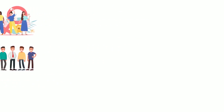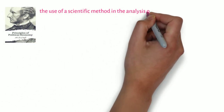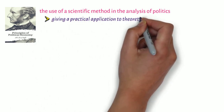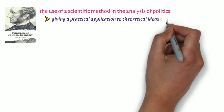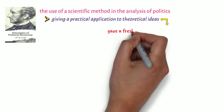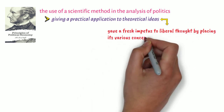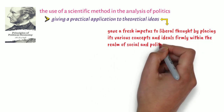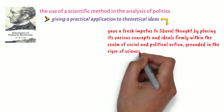The most important aspect of Principles is the use of a scientific method in the analysis of politics, thus giving a practical application to theoretical ideas. This gave a fresh impetus to liberal thought by placing its various concepts and ideals firmly within the realm of social and political action, grounded in the rigor of science.